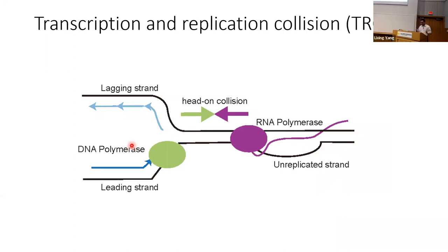We want to study transcription-replication collision — the collision between DNA polymerase and RNA polymerase complexes. In normal cells, this is unavoidable because they use the same DNA template. When they crash, repair mechanisms properly fix the collision. For transcription, it's not too much of a problem — you degrade the RNA and restart. But for DNA replication, if it crashes, it's potential DNA damage that the cell must properly repair. We think a subset of somatic SVs are driven by this process.